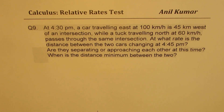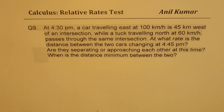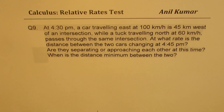Question number nine: at 4:30 PM, a car traveling east at 100 kilometers per hour is 45 kilometers west of an intersection, while a truck traveling north at 60 kilometers per hour passes through the same intersection. At what rate is the distance between the two vehicles changing at 4:45 PM? Are they separating or approaching each other at this time?